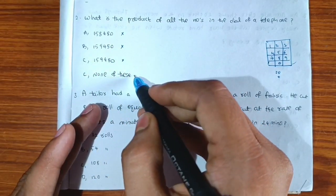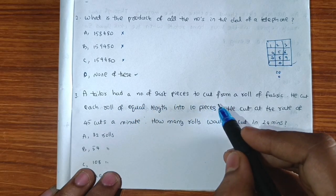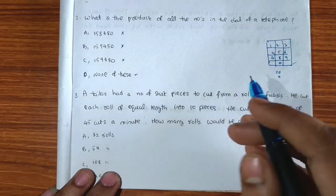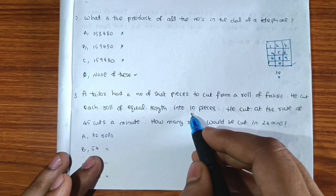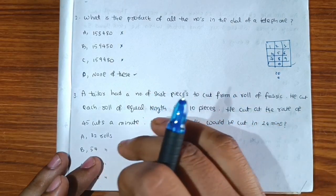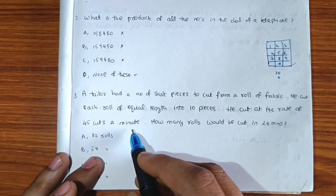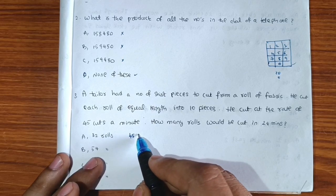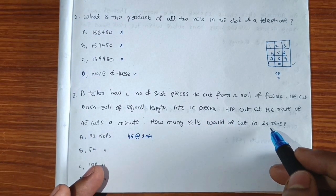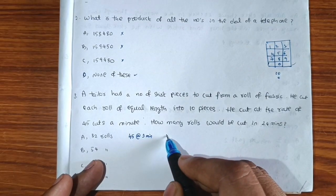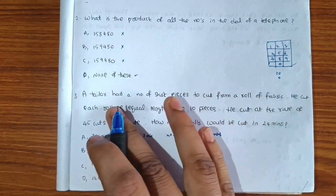Third question: A tailor had a number of pieces to cut from a roll of fabric. He cuts each roll of equal length into 10 pieces at a rate of 45 cuts per minute. We need to find how many rolls would be cut in 24 minutes.